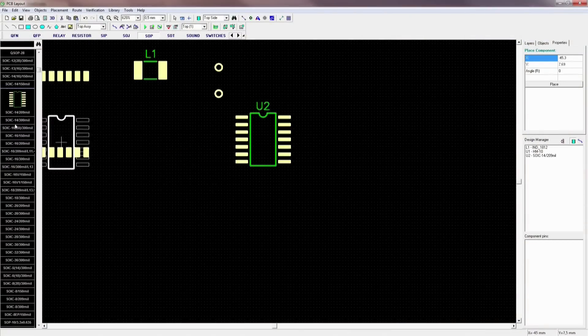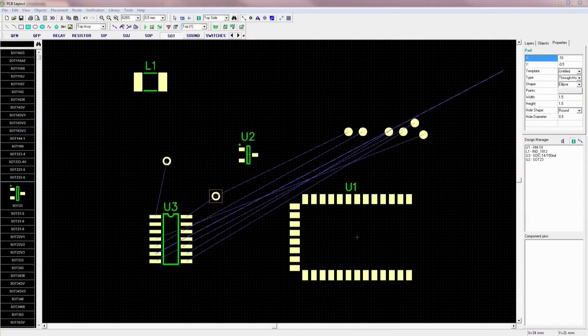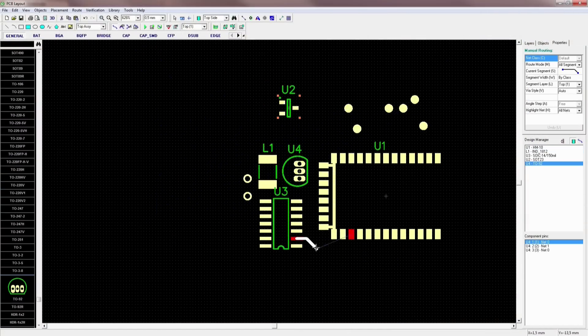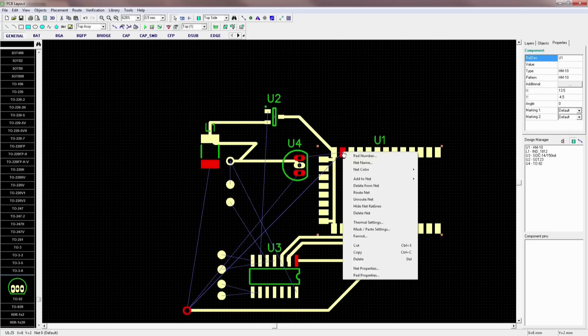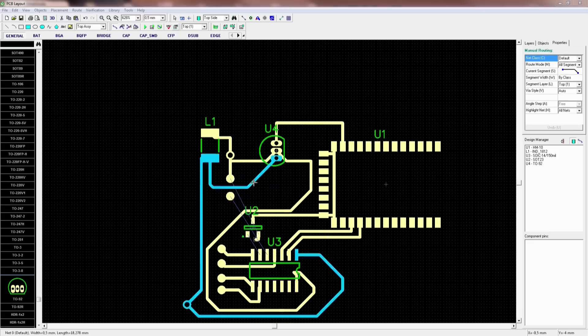I haven't used a voltage regulator on the breadboard, but I have added it to the PCB circuit, since I would get up to 4.2V from the battery.